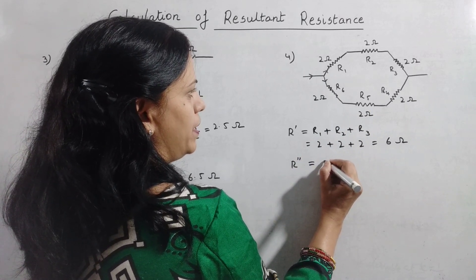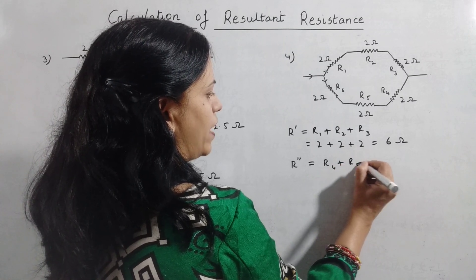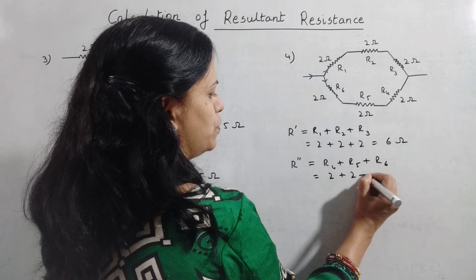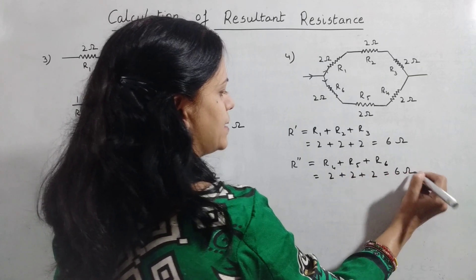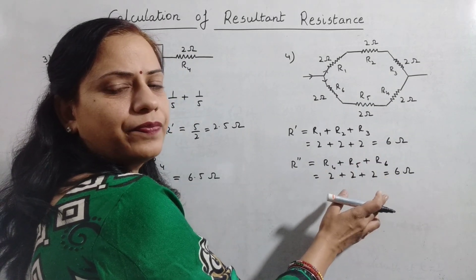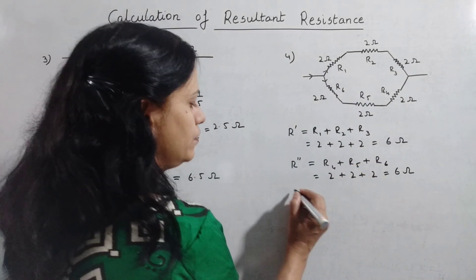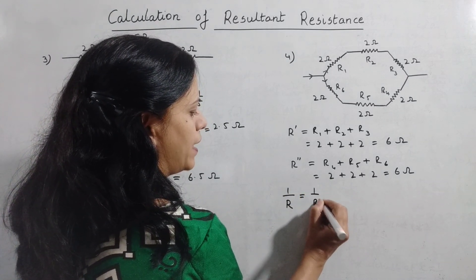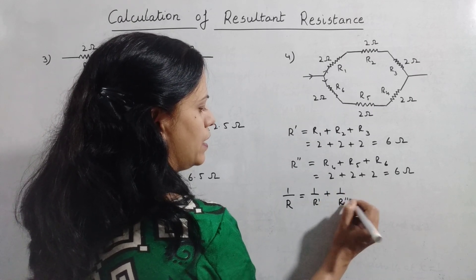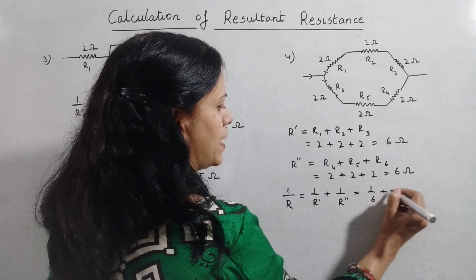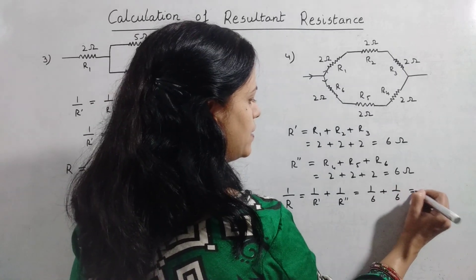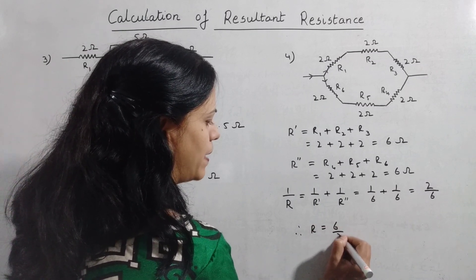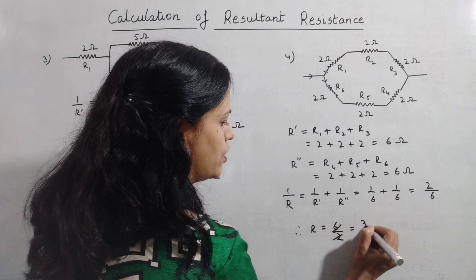Now these two resultants are in parallel with each other. Using the parallel formula, 1 upon R equals 1 upon R' plus 1 upon R', that is 1 by 6 plus 1 by 6, which sums up to 2 by 6. Therefore R will be 6 by 2, that is 3 ohms.